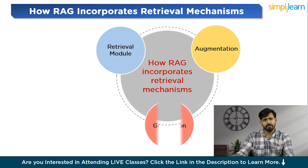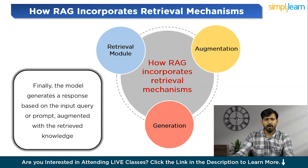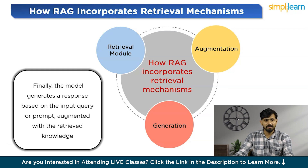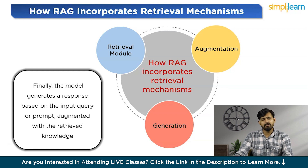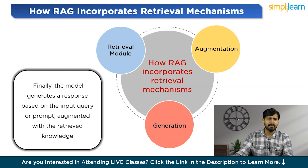The third component is generation. The model generates a response based on the input query or prompt, augmented with the retrieved knowledge. By leveraging both the model's pre-existing knowledge and information retrieved from external sources, RAG produces more informed and contextually appropriate outputs. RAG has been applied to various NLP tasks including question answering, text summarization, and dialogue generation, enhancing the model's ability to produce high-quality outputs across a wide range of applications.